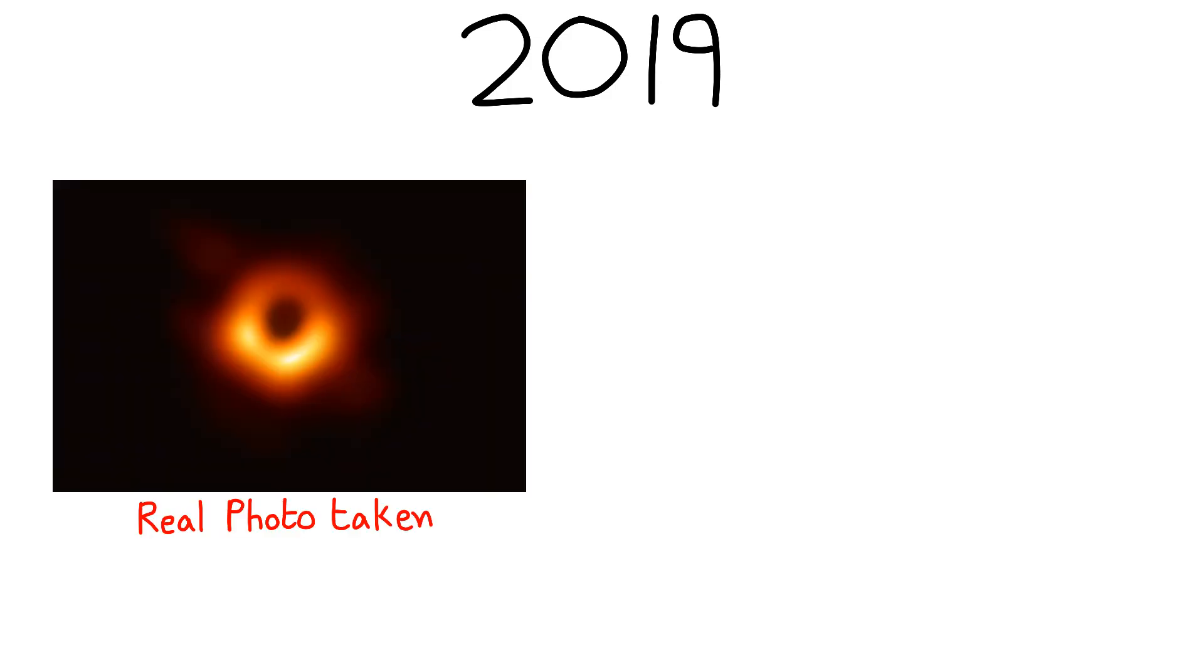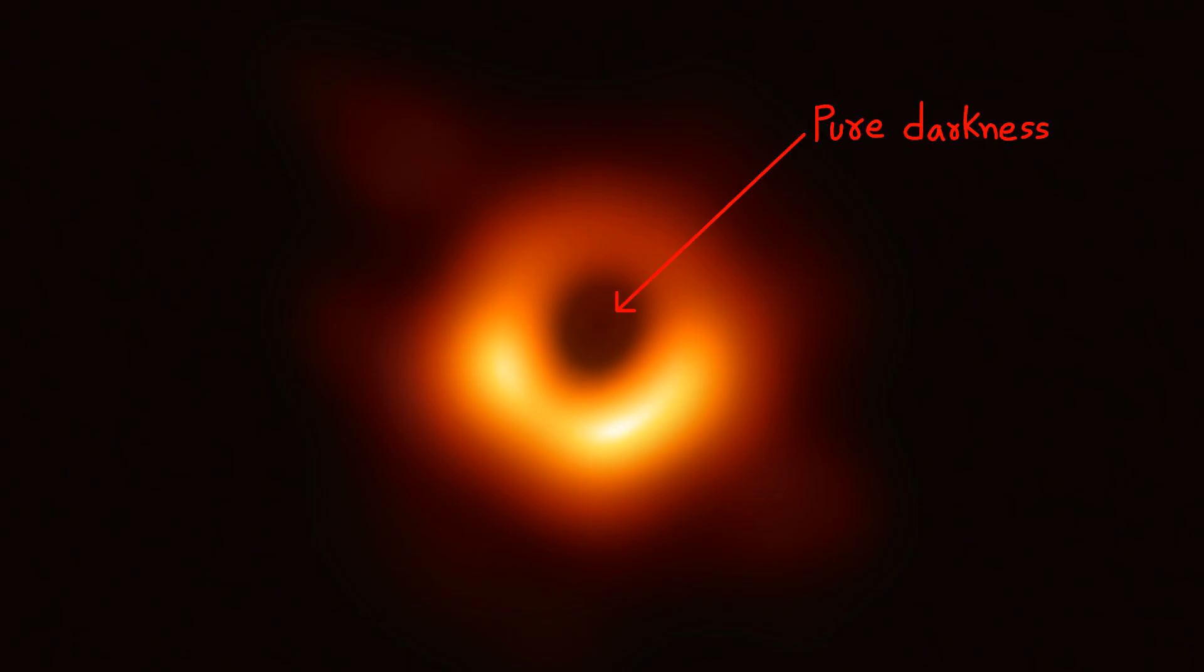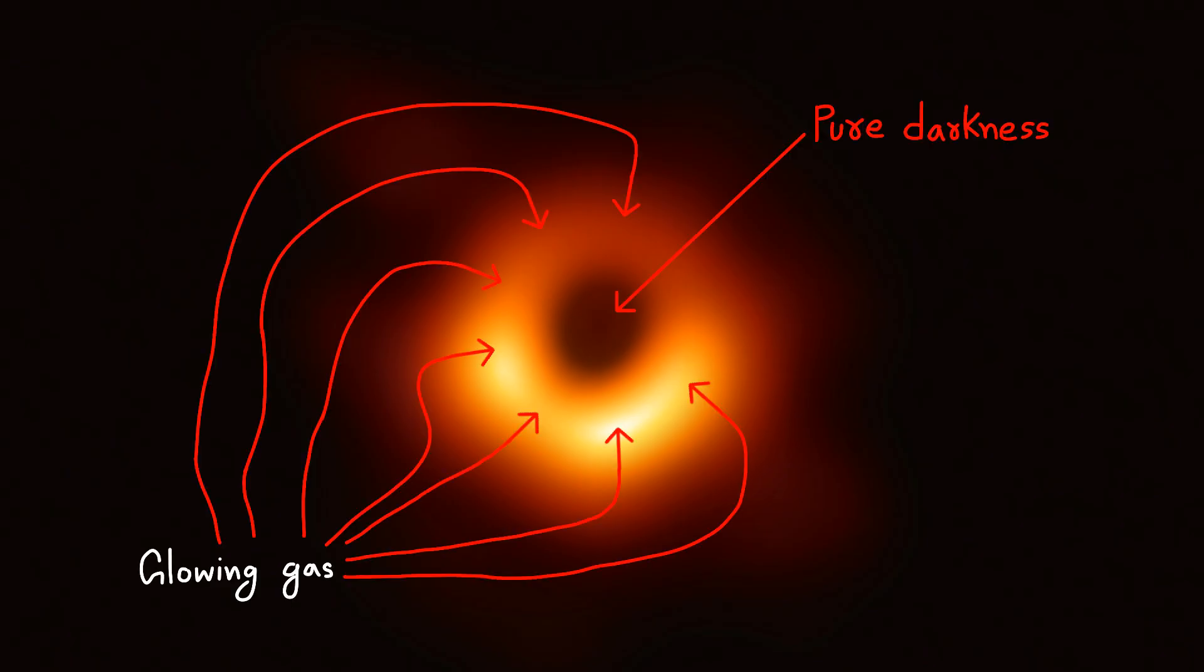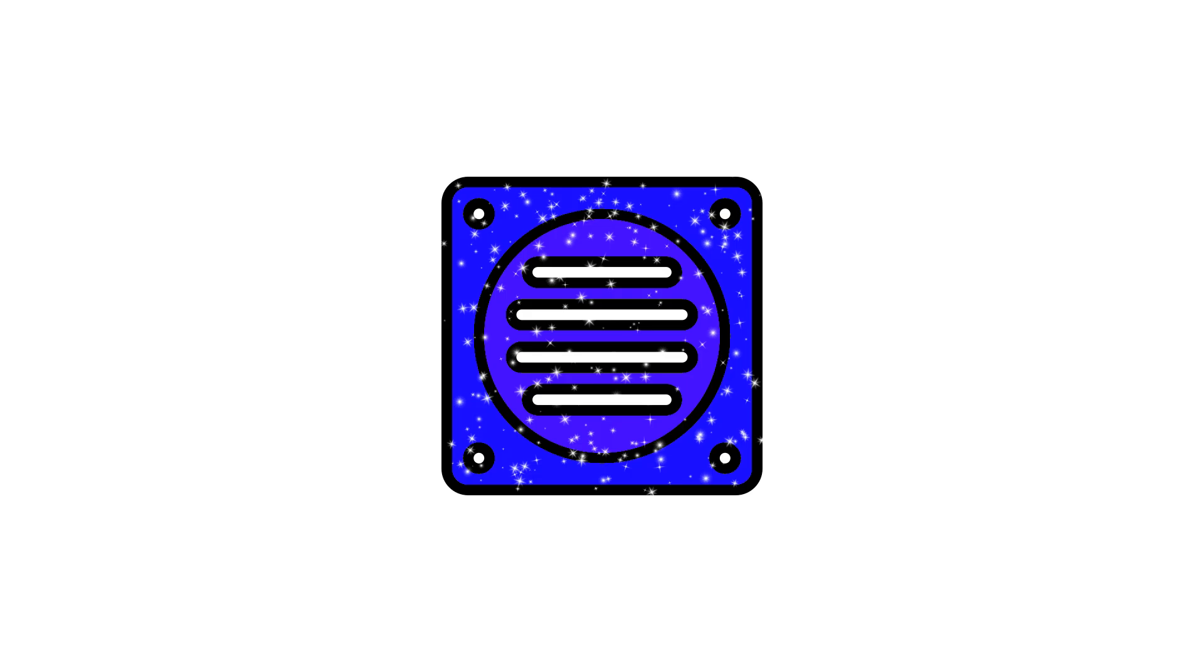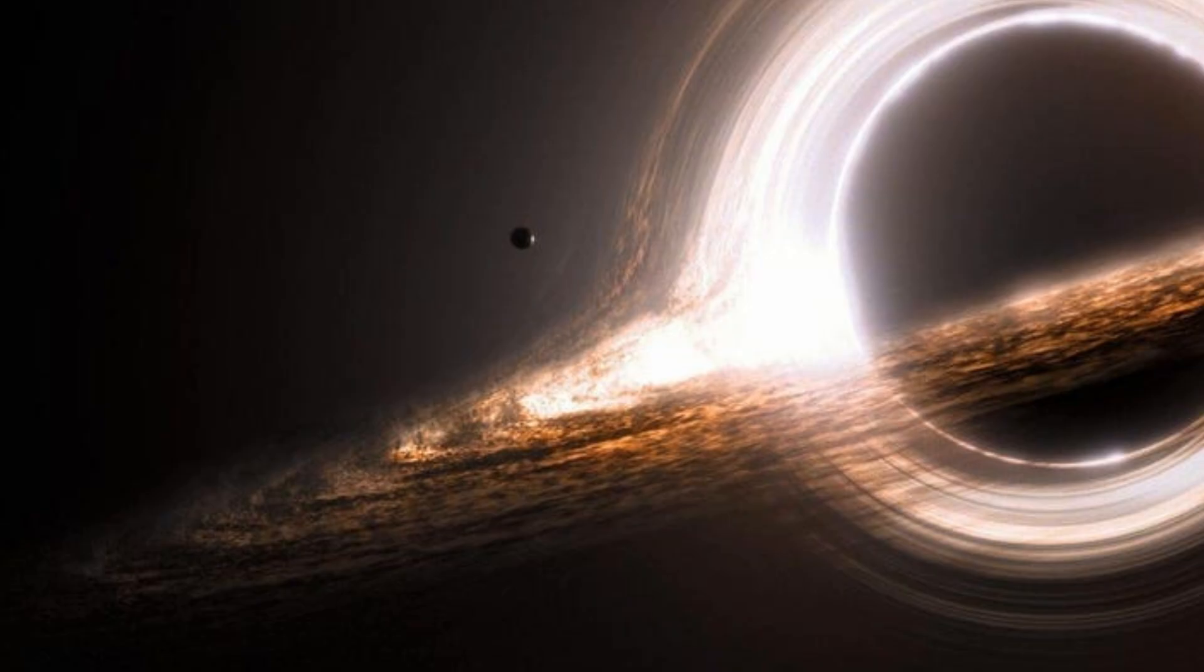In 2019, humans finally photographed the shadow of an event horizon around the black hole in galaxy M87. What they saw was a circular region of pure darkness surrounded by glowing gas being pulled into nothingness. It's like looking at a cosmic drain where reality itself gets flushed away. The event horizon represents the ultimate unknown frontier, not just of space but of reality itself—a place where the known ends and the unknowable begins.